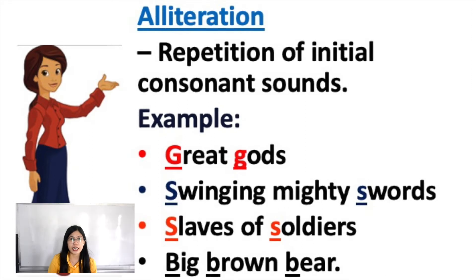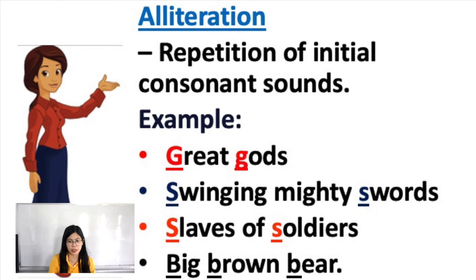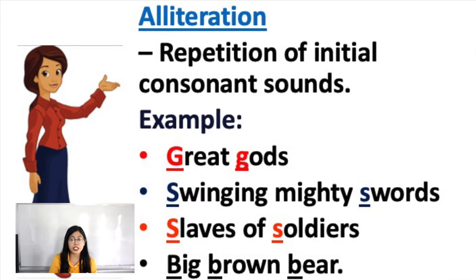Next example: 'Slaves of soldiers.' The initial consonant sound S is repeated in 'slaves' and in 'soldiers.' And then next: 'Big, brown, bear.' The consonant sound B is repeated in the first letters of the words 'big,' 'brown,' and 'bear.' So that is alliteration.